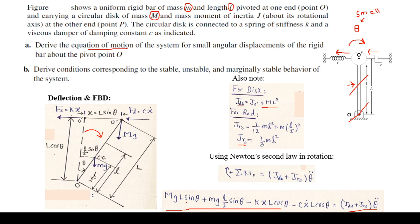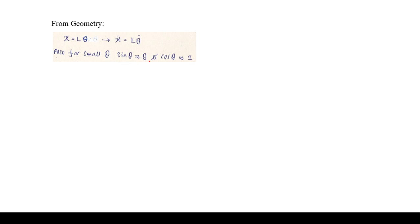Because sin(theta) and cos(theta) appear in the equation, this differential equation of motion is nonlinear. We convert it to a linear equation by assuming small deflections, so sin(theta) ≈ theta and cos(theta) ≈ 1. Substituting x = L·theta and x_dot = L·theta_dot, the nonlinear equation becomes a linear equation.